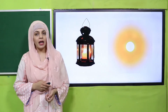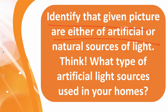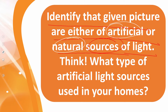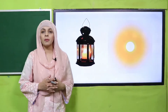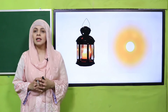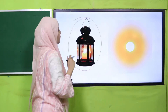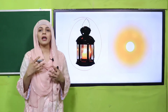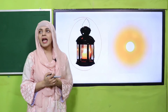Sound and light is the name of our chapter. Here you can see two sources of light — one is the sun and the other is a candle light. Quickly tell me: identify whether the given pictures are natural or artificial sources of light. Think and tell what type of artificial light sources are used in your homes. Of course, sun is the natural source of light, and a lamp or candle is an artificial source of light. Bulbs, LEDs, and tube lights are all artificial sources of light.